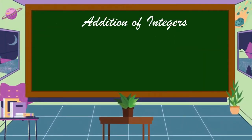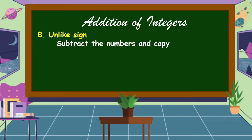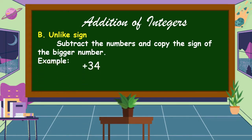How about if the addends are unlike signs or different signs? In this situation, we're going to subtract the numbers and copy the sign of the bigger number. For example, positive 34 plus negative 21. We have positive and negative, so we subtract. 34 minus 21 is equal to 13, and the sign of the bigger number — 34 — is positive. So our answer is positive 13.